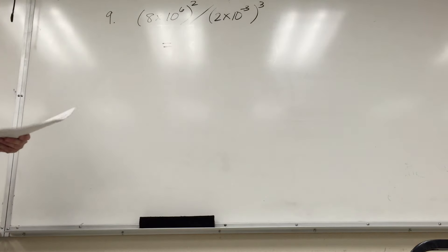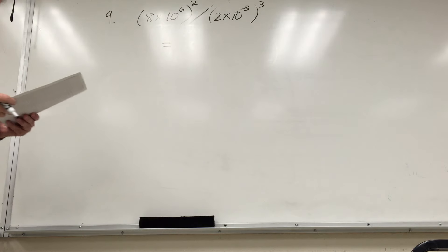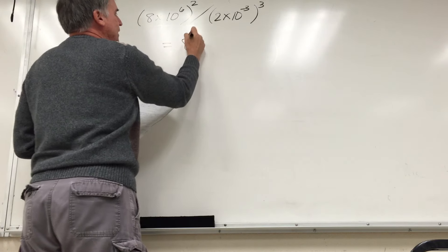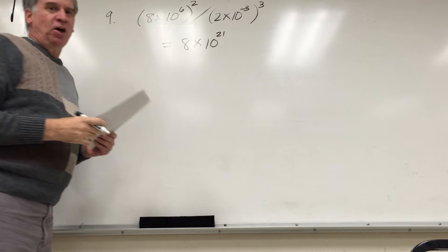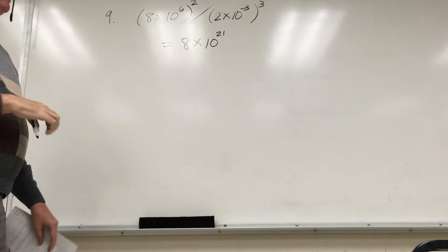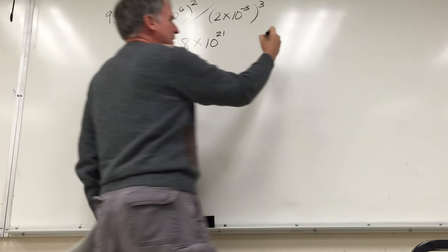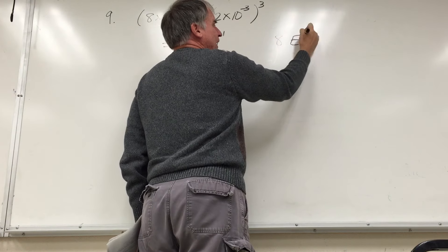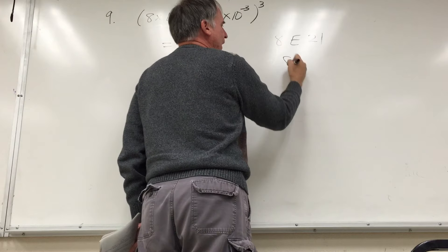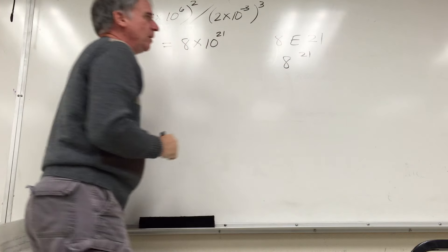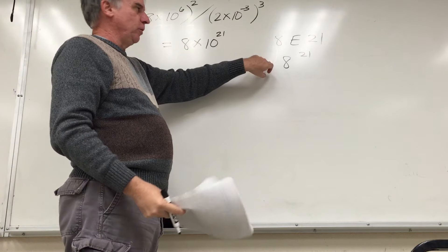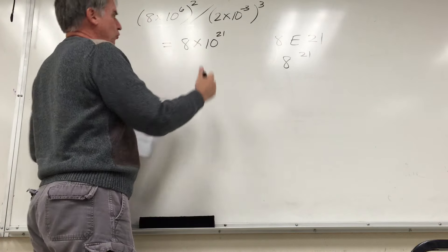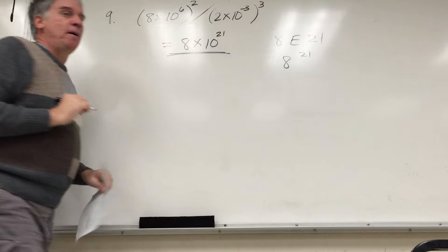The answer to that is 8 times 10 to the 21. Depending upon your calculator, if you've done it correctly, you might see a display like 8E21 or 8 and 21. That's one of the things you have to learn about in your calculator. Those are your calculator's way of displaying that number.